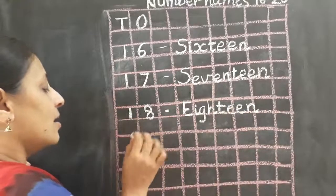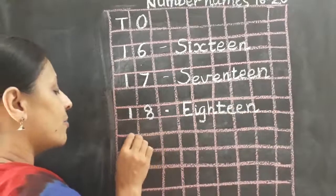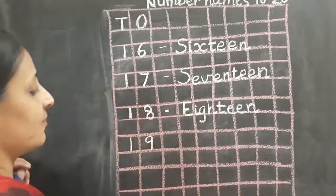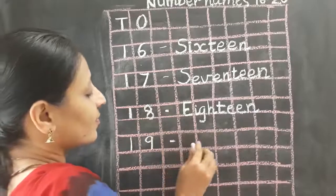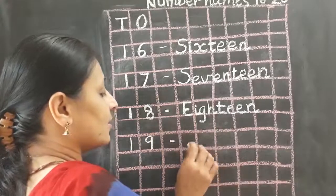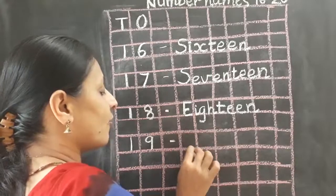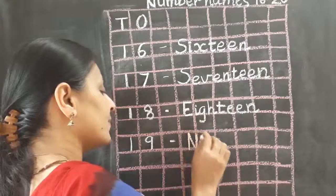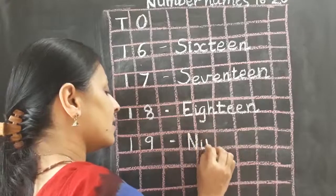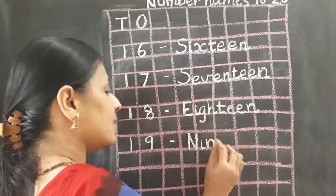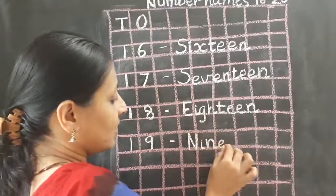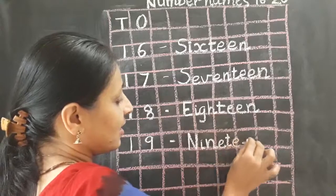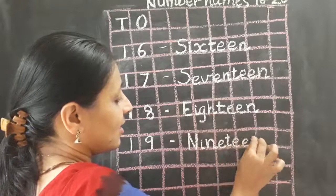Now we will leave one box and write 19. The number name of 19 is N, I, N, E, T, E, E, N.